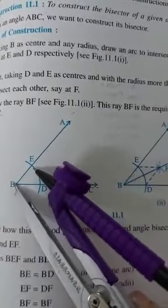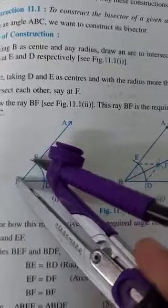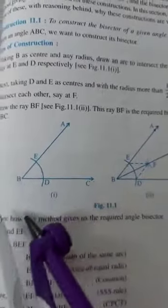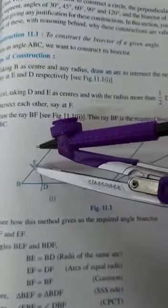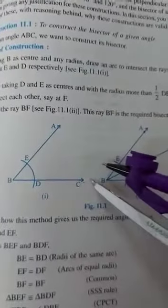First, place the compass at B and with a convenient radius, draw an arc. This arc cuts the angle ABC at two points, D and E.